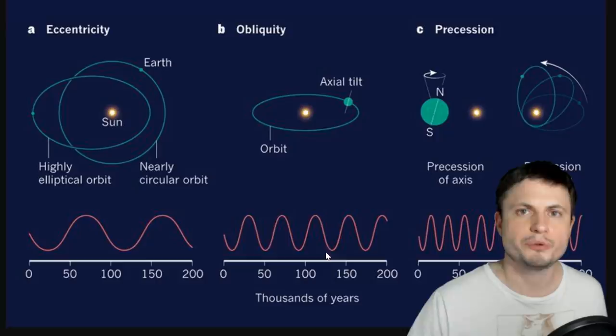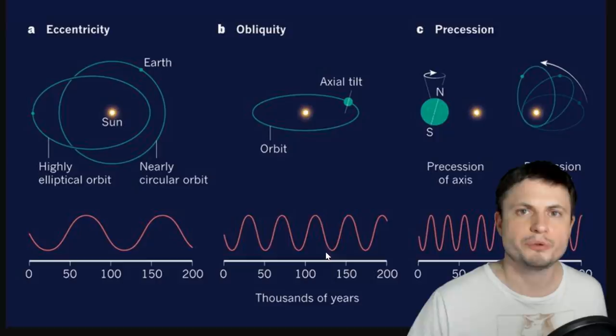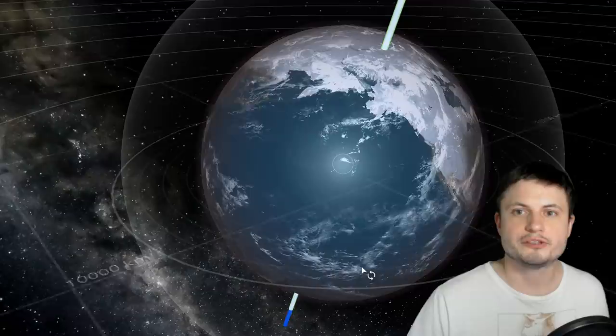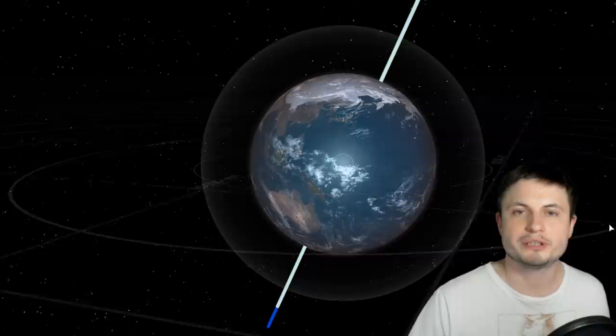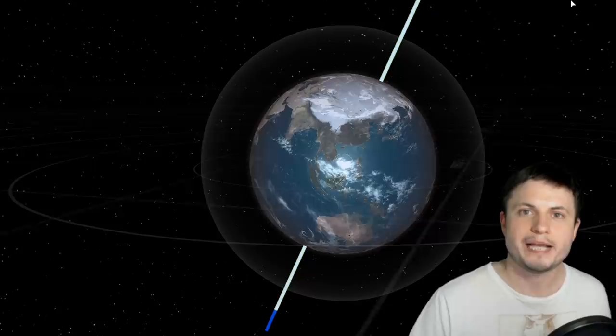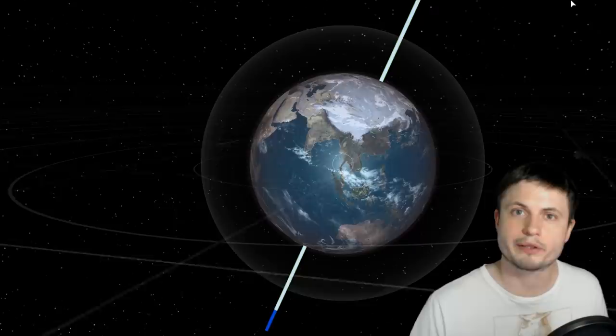And this obliquity or axial tilt cycle is really really important. You can actually kind of visibly see it right here in the simulation because you'll notice that our planet is a little bit tilted. This angle here is about 23 and a half degrees and because of this axial tilt our planet has seasons. Basically the winters in the north hemisphere are colder while the summers are warmer and the opposite happens on the other side of the planet.